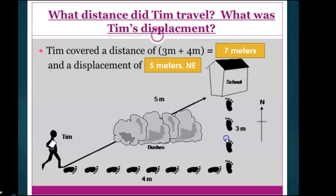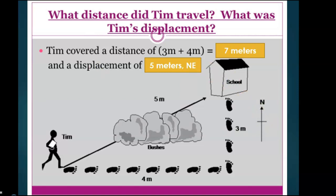The distance is 4 meters plus 3 meters, which equals 7 meters. The displacement is measured from the starting point — Kim's starting point — to the end point, which is the school. The shortest point-to-point distance is 5 meters. Do not forget that displacement has direction, so the answer is 5 meters northeast, using the compass. The total path traveled — 4 plus 3 equals 7 meters — that is the distance, and the displacement is 5 meters from starting point to end point with direction.